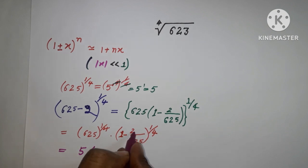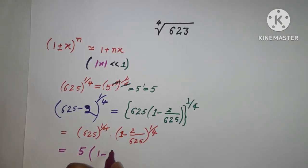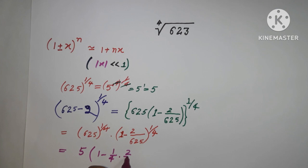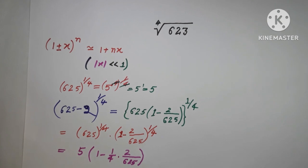Now it is going to multiply. By using this formula, 1/4 multiplies with 2/625. So we have 5(1 - 1/4 × 2/625).